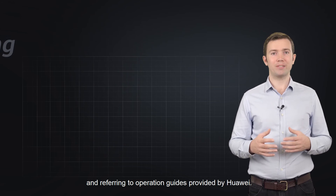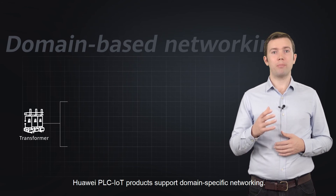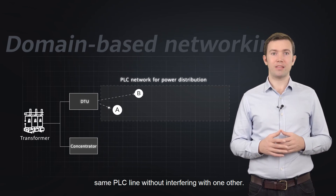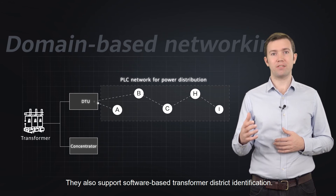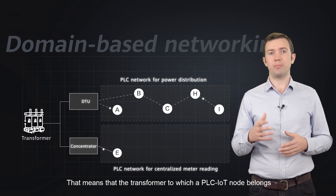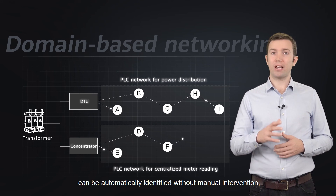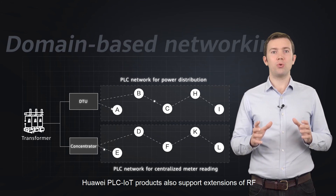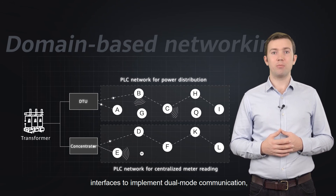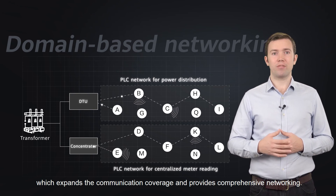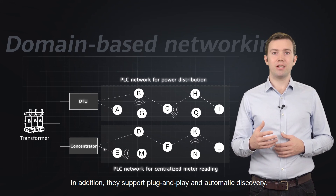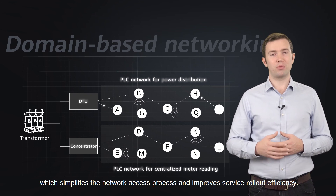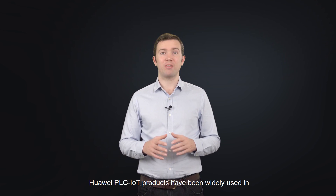Huawei PLC IoT products support domain-specific networking. Multiple PLC networks can be built on the same PLC line without interfering with one another. They also support software-based transformer district identification, meaning the transformer to which a PLC IoT node belongs can be automatically identified without manual intervention, simplifying installation and deployment. Huawei PLC IoT products also support extensions of RF interfaces to implement dual-mode communication, expanding coverage and providing comprehensive networking. In addition, they support plug-and-play and automatic discovery, which simplifies the network access process and improves service rollout efficiency.